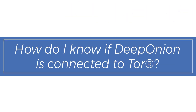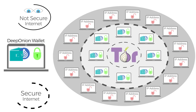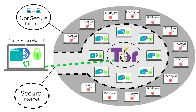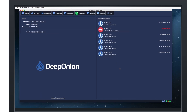How do I know if DeepOnion is connected to Tor? The DeepOnion wallet has the latest Tor integrated with it. Your DeepOnion wallet automatically uses Tor when you start it. Your wallet connects to other DeepOnion wallets that also use Tor. You can see this by opening up your DeepOnion wallet and hovering your mouse pointer over the Tor icon in the bottom right corner.